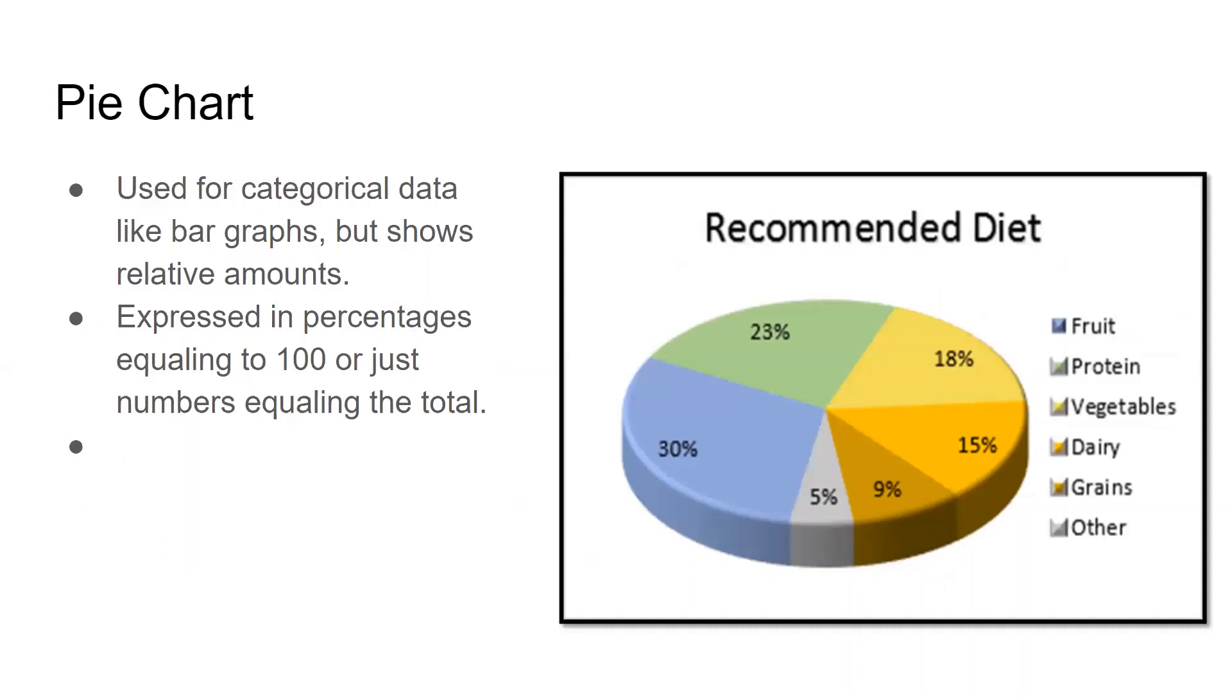So pie charts are kind of in that similar trend to bar graphs. In this case the pie chart is used similar with categorical data, so that's the same, but here it's more relative to the amount you have. So the best example is a percentage, which is the most common, one of the most common things for a pie chart to show you. Here it shows you relative recommended diet percentages. Here you have fruit at a high 30%, where dairy, vegetables are in a little smaller percentage change. So you see relative to your entire diet how that's supposed to be broken up into.